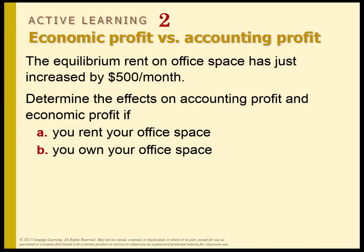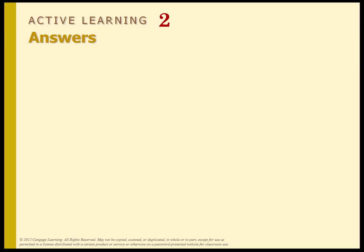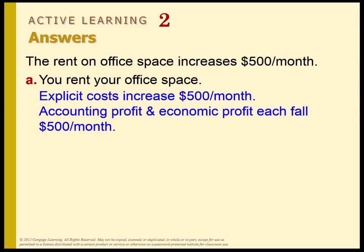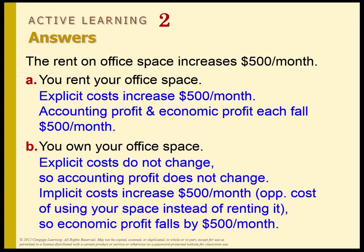If you rent your office space, the explicit costs increase $500 a month. Therefore, both accounting profit and economic profit fall $500 a month, because this is an explicit cost — every month you're paying the rent on your office space. But let's suppose you own your office space. Explicit costs are not going to change because you're not actually outlaying financial money every single month. But the implicit costs — what you could earn if you rented out your office space to someone else — does increase by $500 a month. So economic profit alone falls by $500 a month.